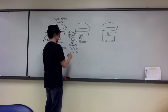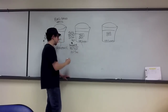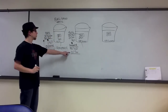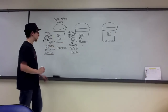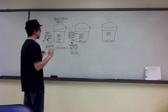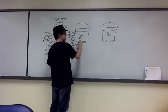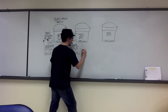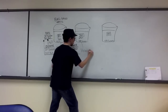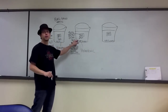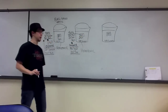We can classify the solution in the beaker based on its solute concentration compared to the bag. The solute concentrations are not equal, so isotonic is out. The solute concentration outside the bag — in the beaker — is higher than inside the bag. So the solution in the beaker is classified as hypertonic to the solution in the bag.